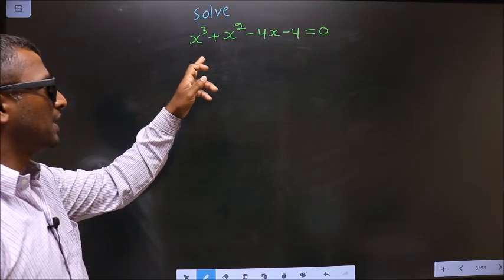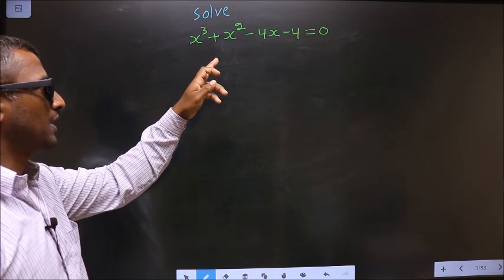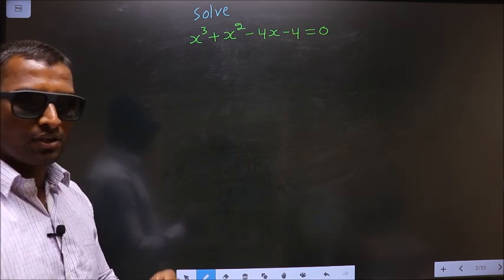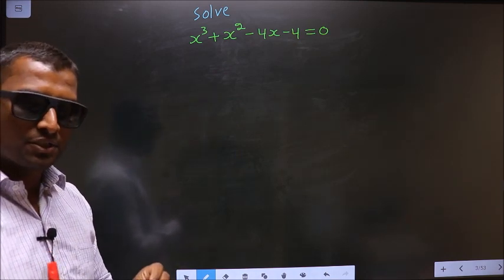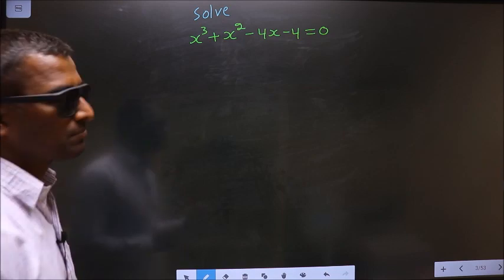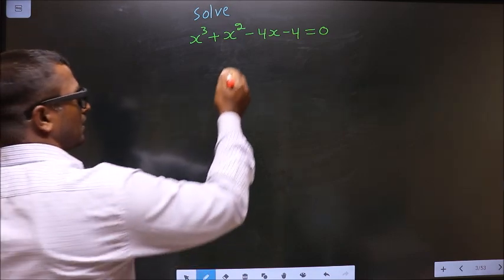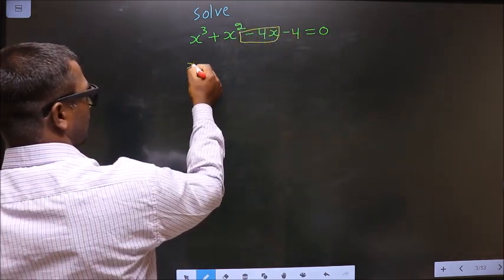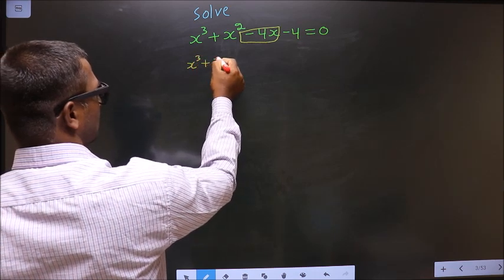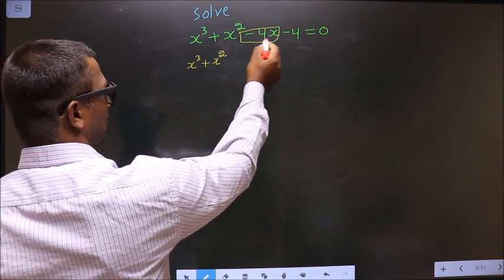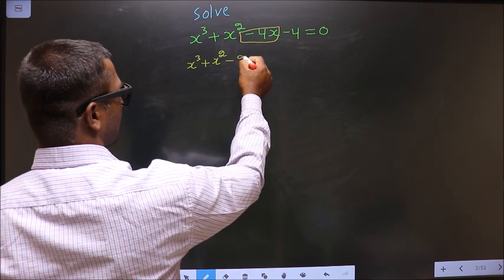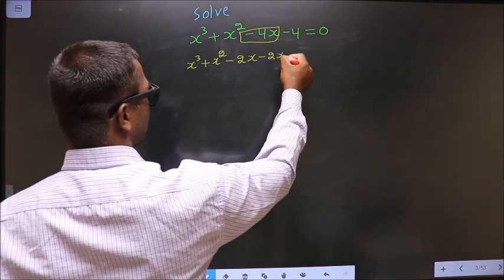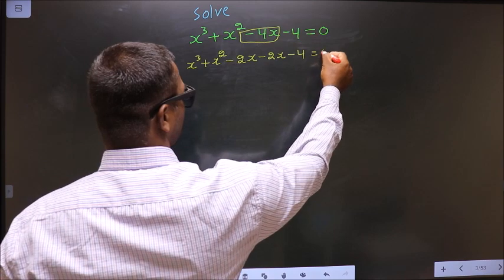Solve x cube plus x square minus 4x minus 4 equal to 0. To solve this, I should change the x term — that is minus 4x. So x cube plus x square, and in place of minus 4x, I will write minus 2x minus 2x minus 4 equal to 0.